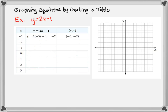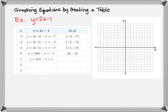Substituting in negative 2 we get negative 5, so the point (−2, −5). Substituting in negative 1 we get negative 3. Substituting in 0 we get negative 1. Substituting in 1 we get 1. Substituting in 2 we get 3. And substituting in 3 we get 5, so our last point is (3, 5).